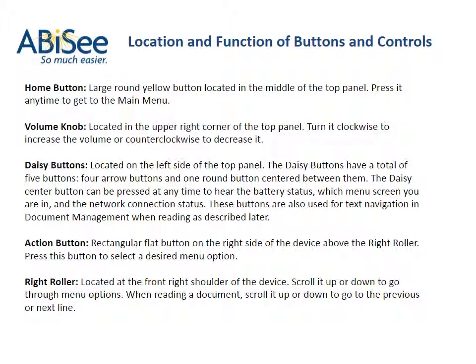Action button: rectangular flat button on the right side of the device above the right roller — press this button to select a desired menu option. Right roller: located at the front right shoulder of the device. Scroll it up or down to go through menu options. When reading a document, scroll it up or down to go to the previous or next line.